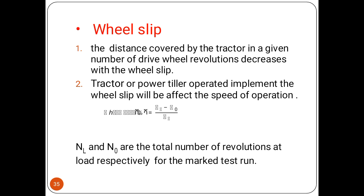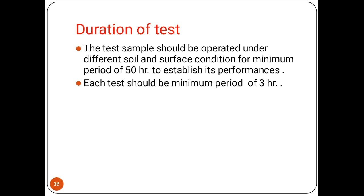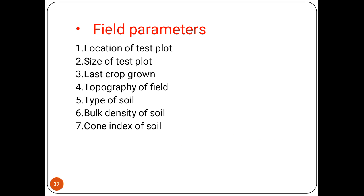Wheel slip is an important factor. The distance covered by the tractor in a given number of wheel revolutions decreases with wheel slip. Therefore, for a tractor power tiller-operated implement, wheel slip will affect the speed of operation. Wheel slip is measured by comparing revolutions at no-load condition versus load condition. Regarding duration of test: the test sample should be operated under different soil and surface conditions for a minimum period of 50 hours to establish its performance, and each test should be a minimum period of three hours.